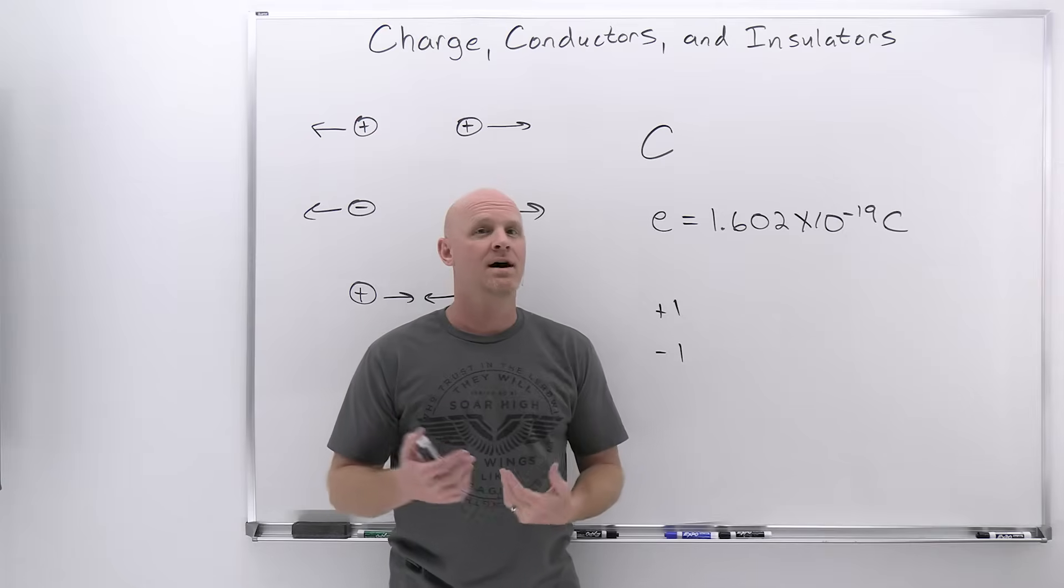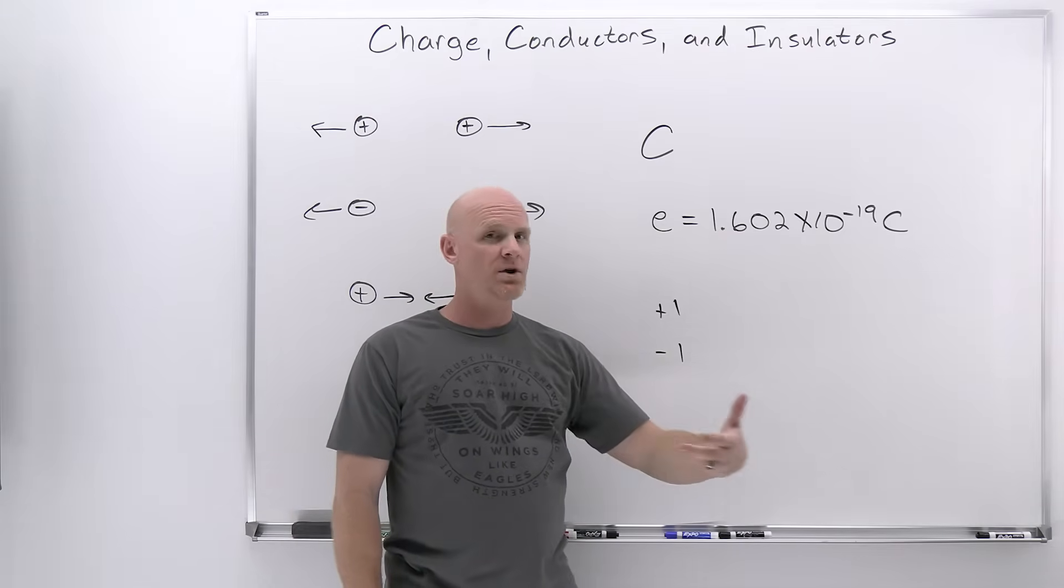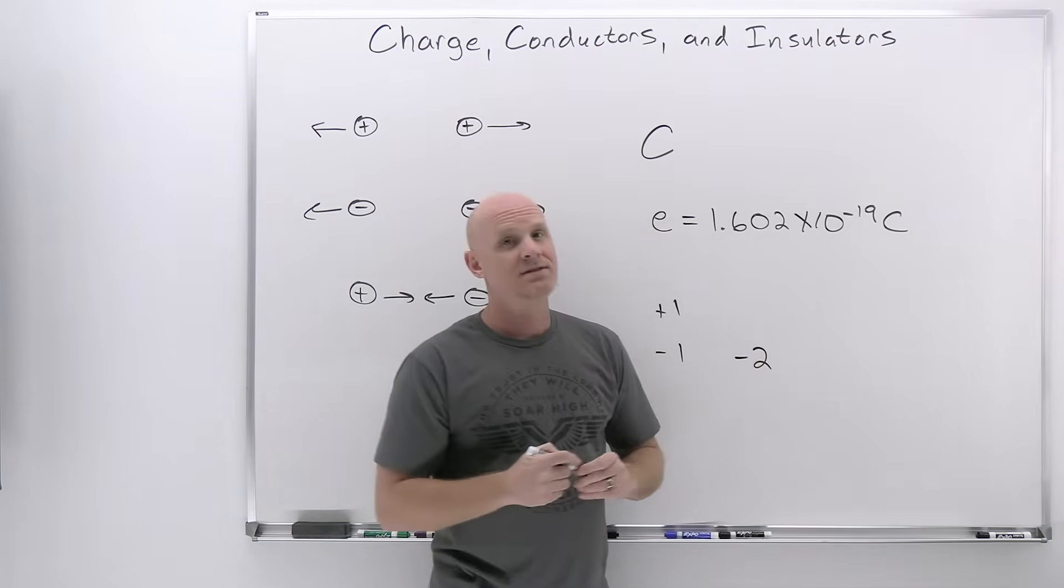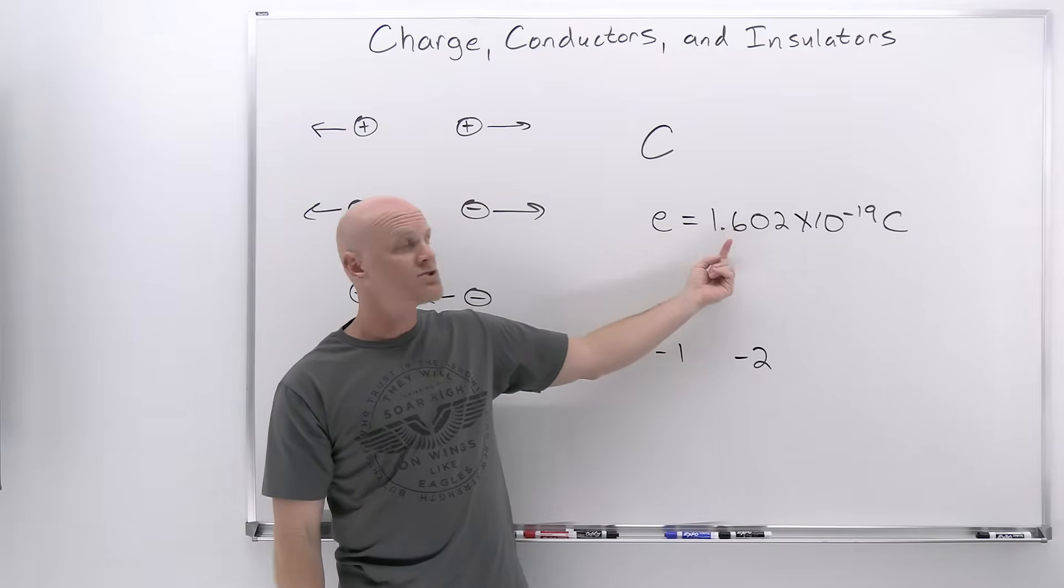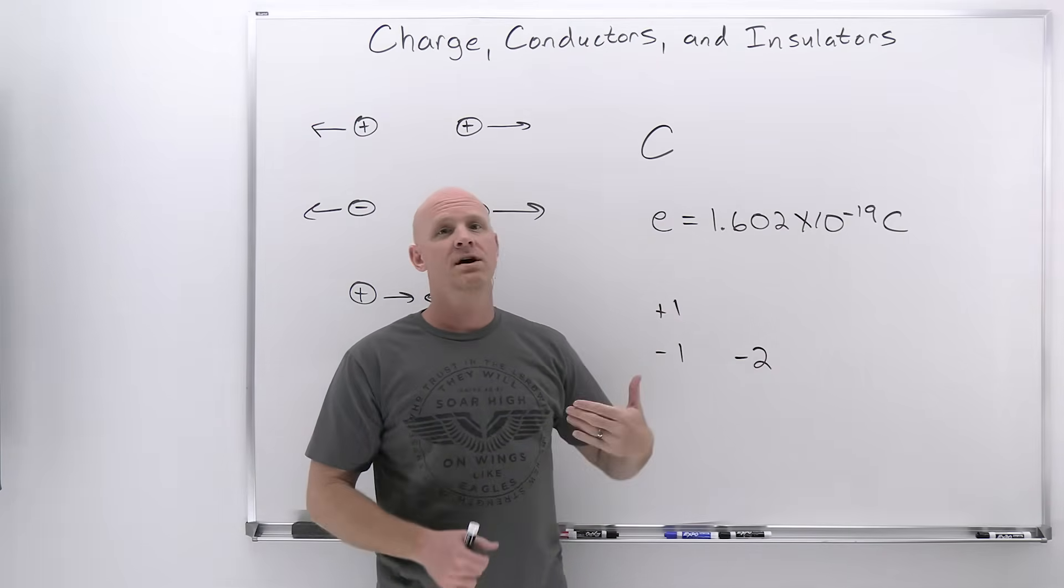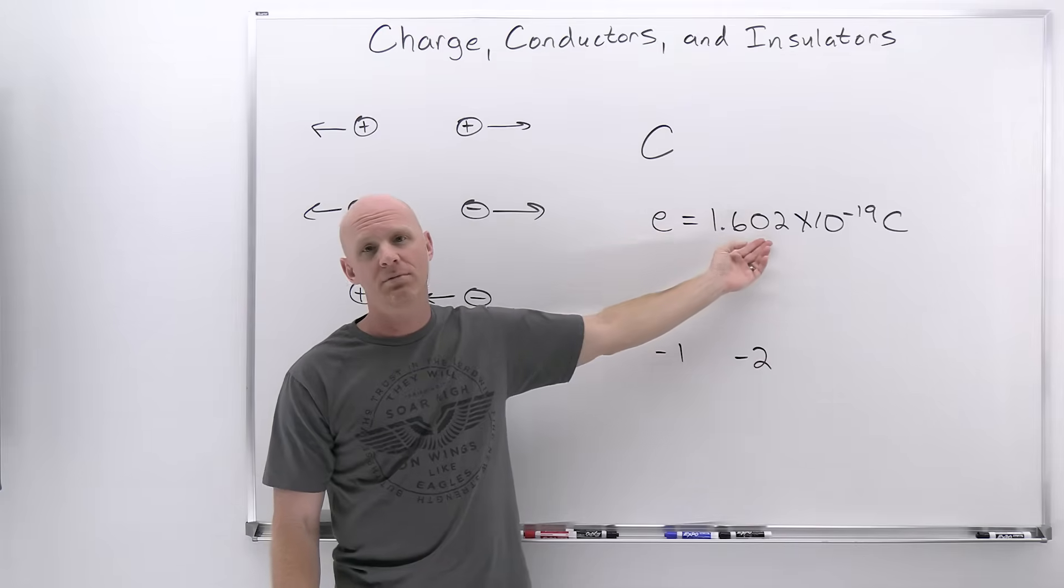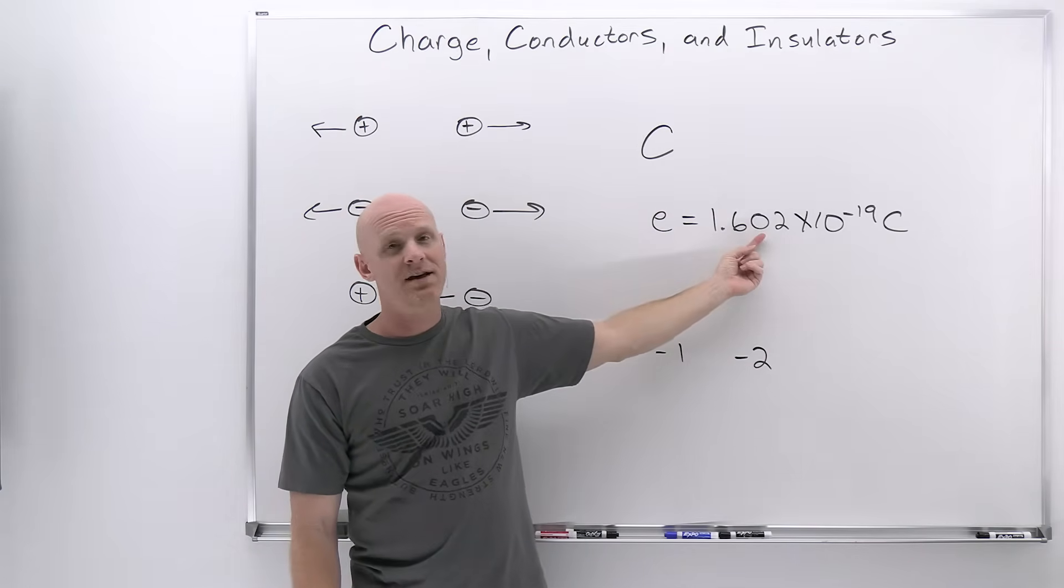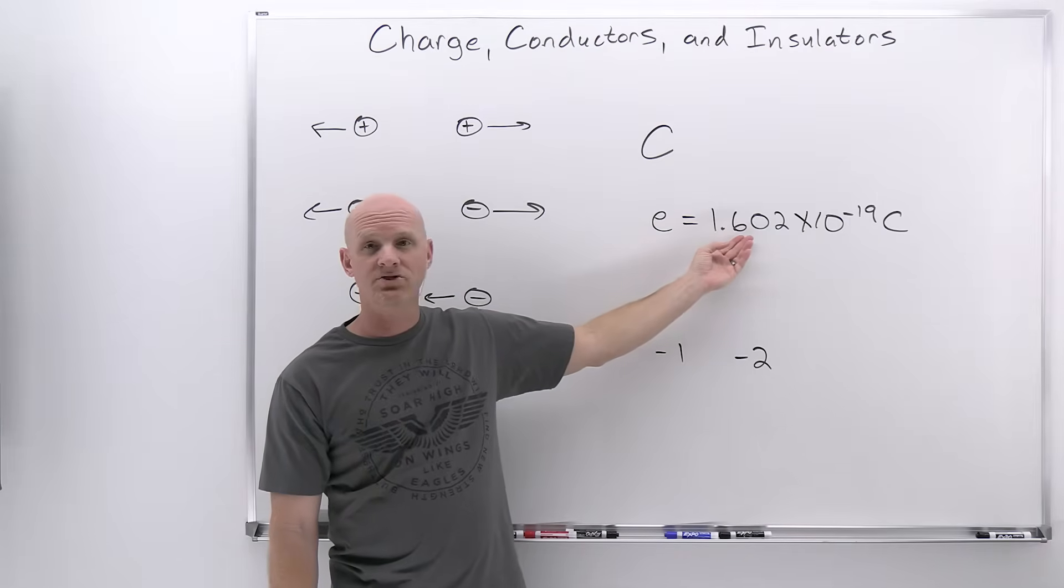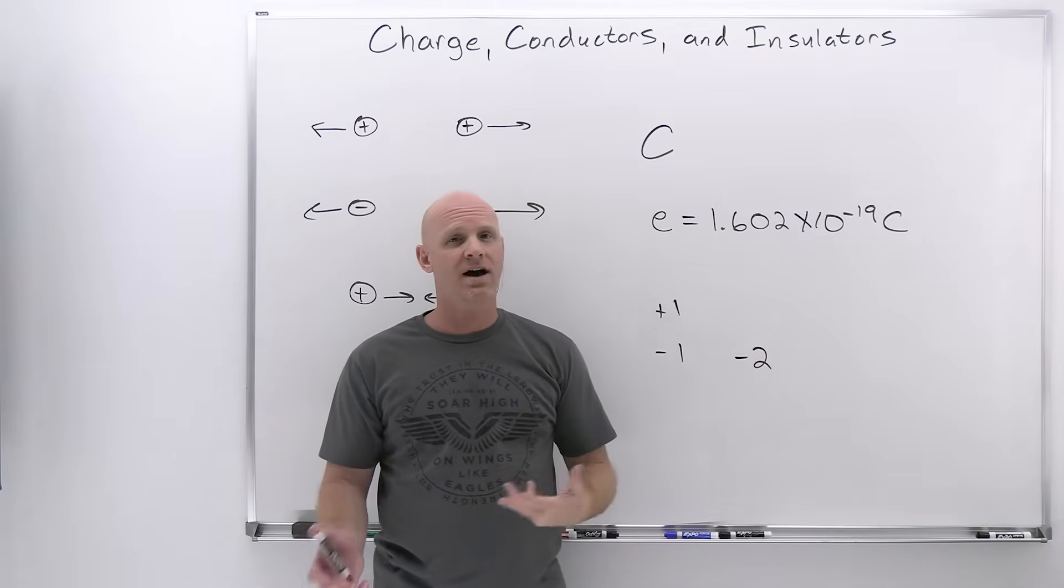Any charge any piece of matter has is going to be some multiple of this number. If you have two more electrons than protons, in chemistry we might refer to an ion with a minus 2 charge. But the truth is, it's just going to have negative 2 times 1.602 times 10 to the minus 19 coulombs of charge. Every charge ultimately comes down to this imbalance of protons and electrons and has to be some multiple of this number. It could be 9 times this or 10 times this, but it can't be like 4.7 times this number. This is the most fundamental unit of charge.